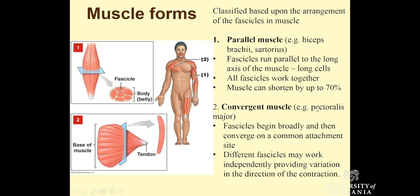In a convergent muscle — for example pectoralis major — all of the fascicles begin quite broadly but then converge to a common attachment point, such as along the sternum, inserting into the side of the humerus. Different fascicles may work independently, providing variation in the direction of contraction. For example, only the upper fascicles might contract, not necessarily the lower fascicles, bringing about variation in control of those muscle contractions and movements.